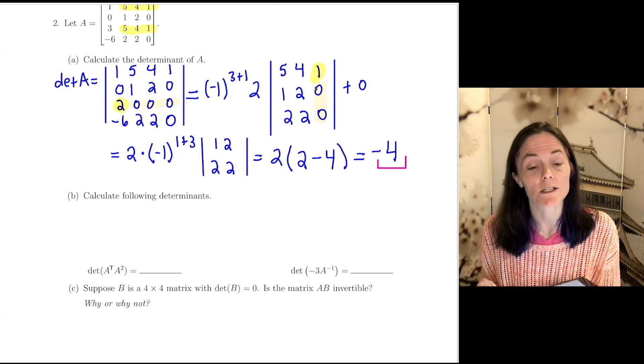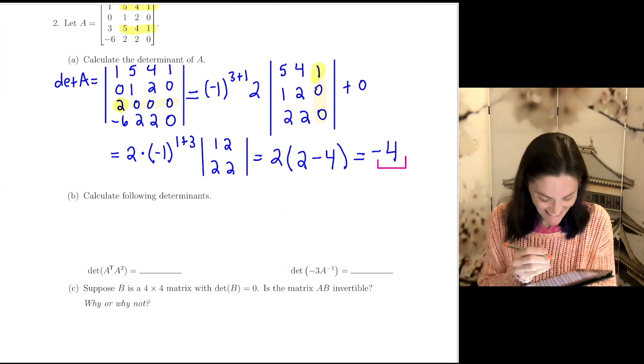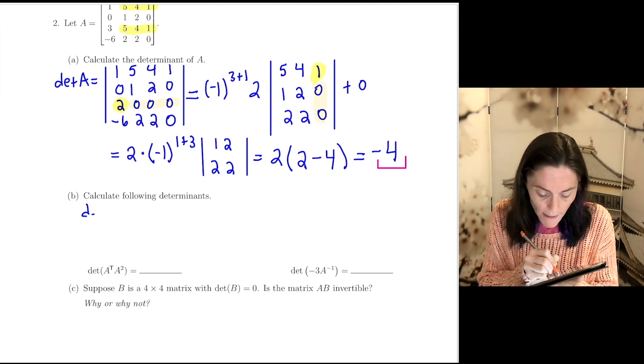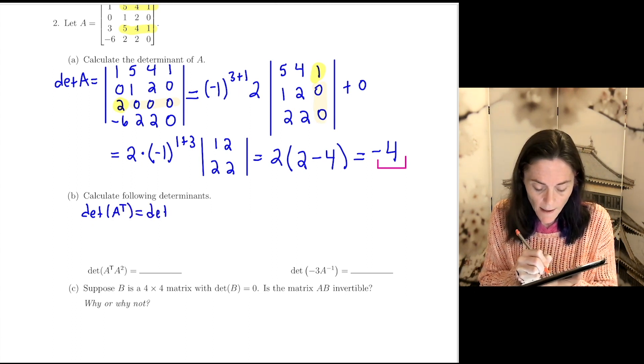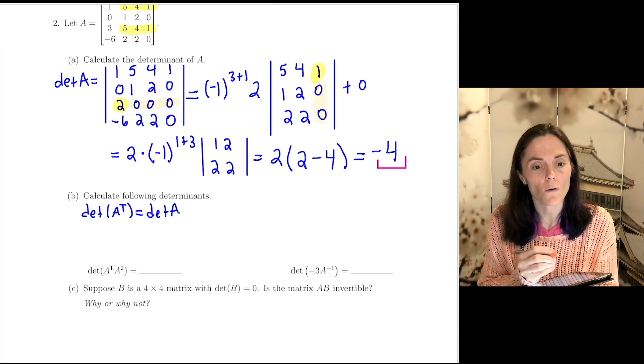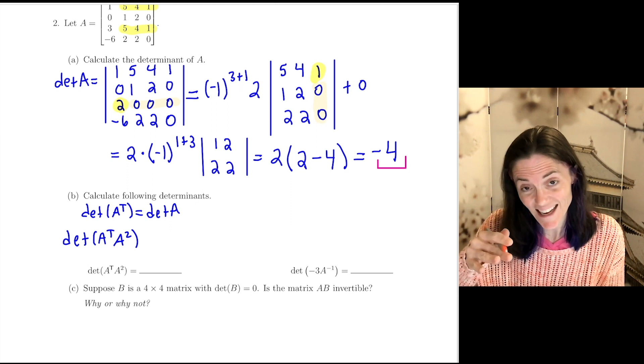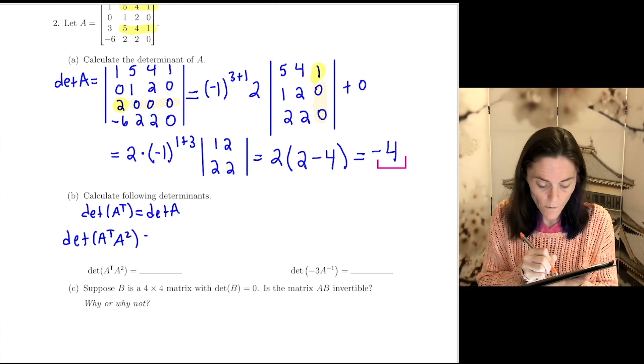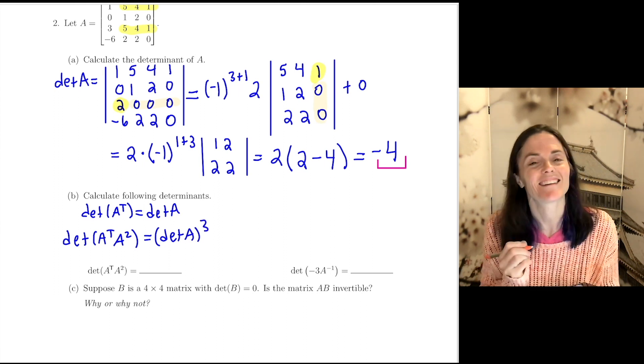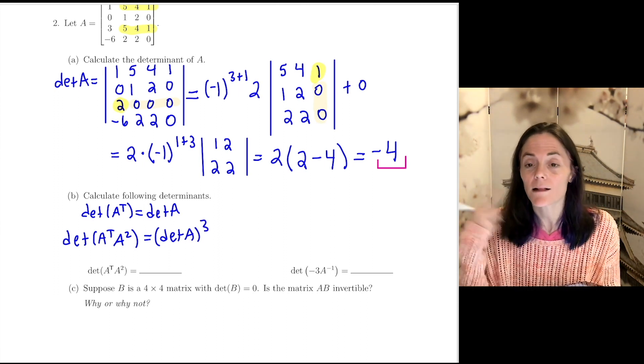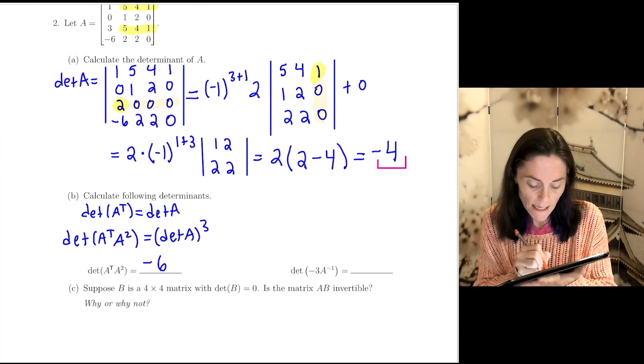For part B, we're moving into properties. We have determinant of A as minus 4. We know the determinant of A transpose is the same thing as determinant of A. And so, this determinant, this will break into determinant A, determinant A, determinant A, or I will write it this way. This will be determinant of A cubed. Here, determinant A is minus 4. And so, we get minus 4 cubed, which is negative 64.